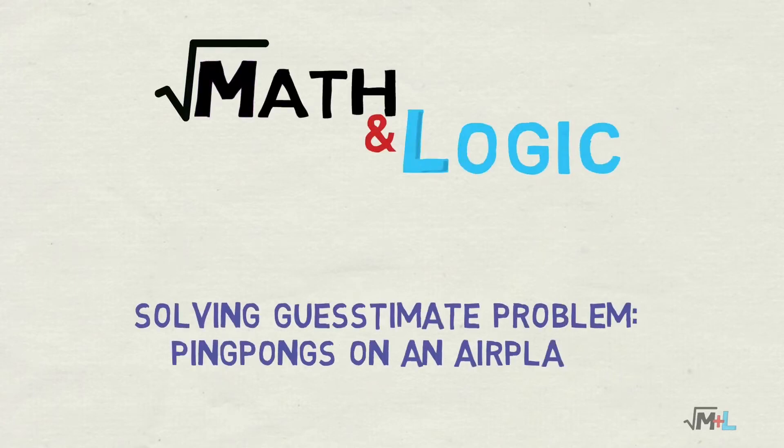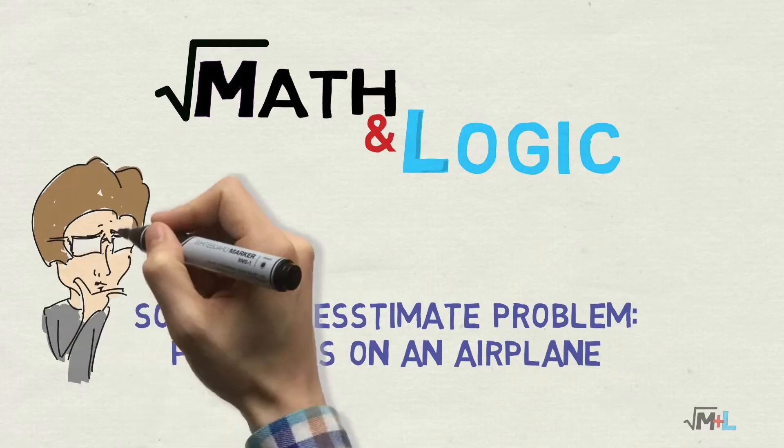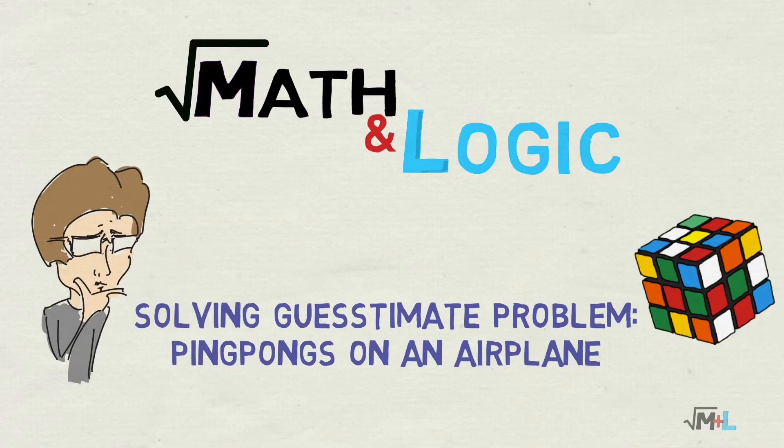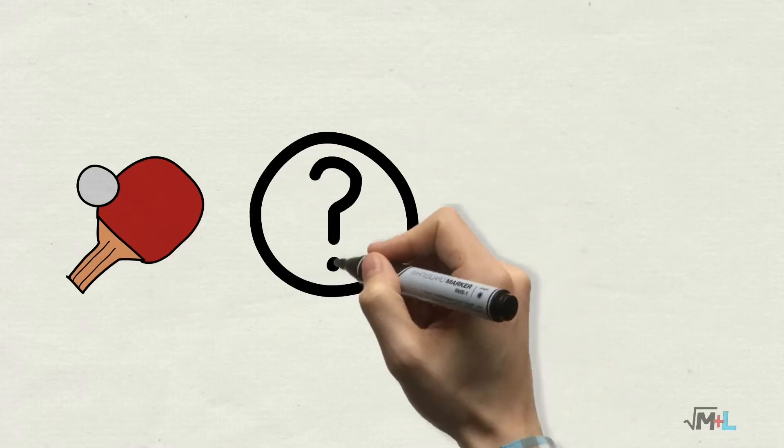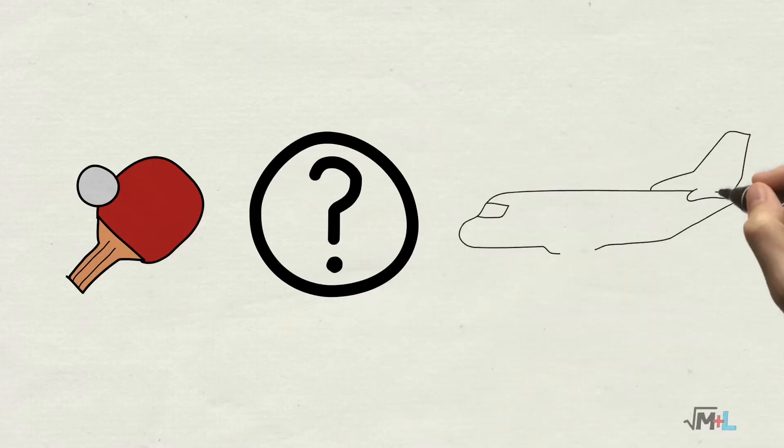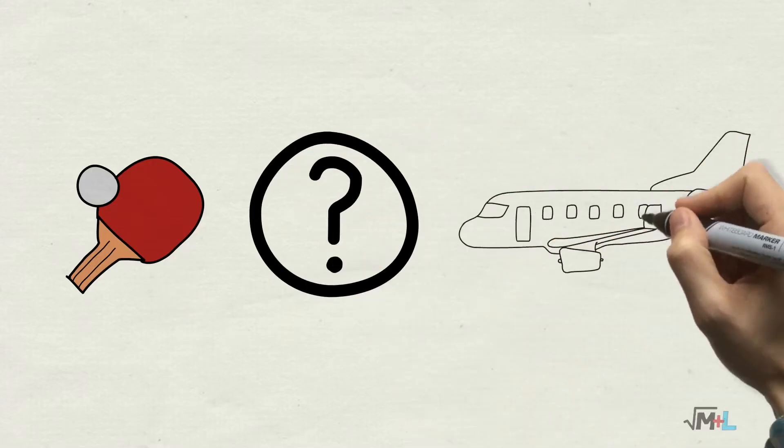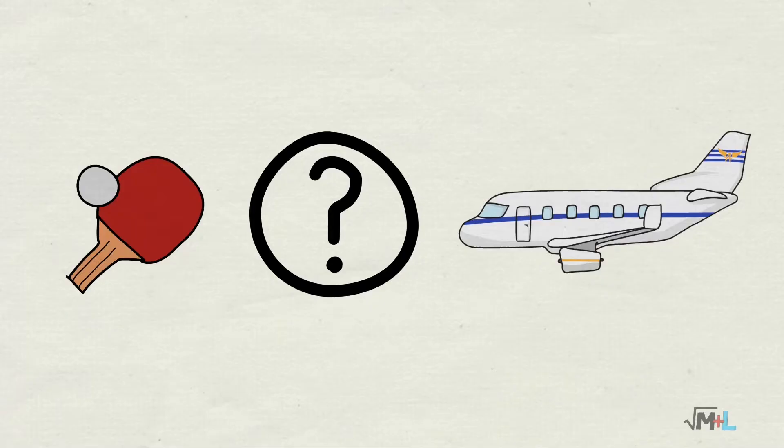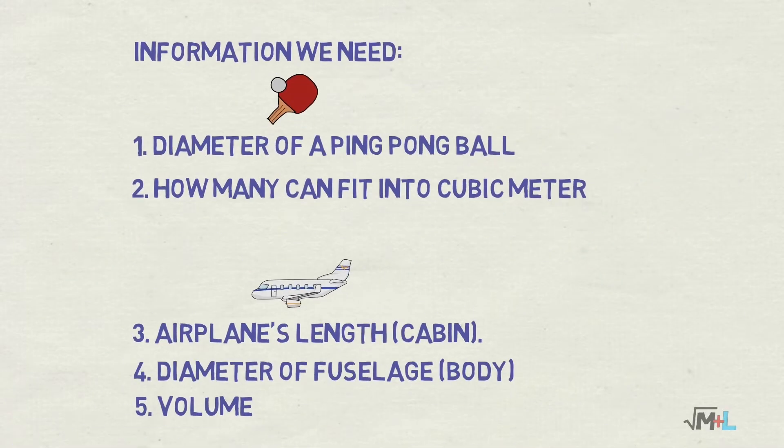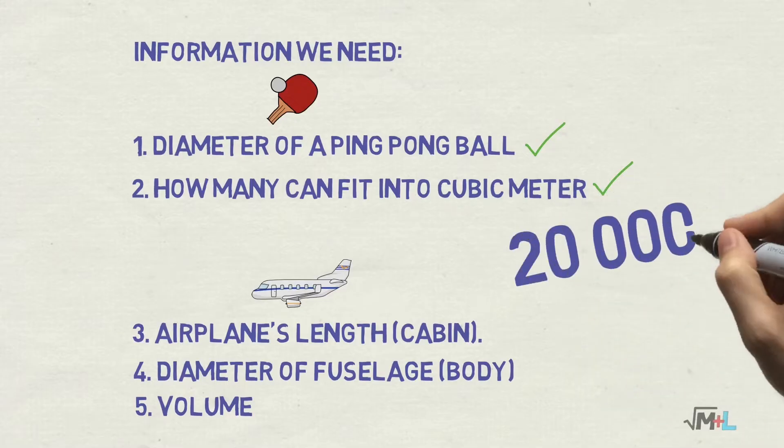Hi everyone! Welcome to Math & Logic. This is part 2 of solving job interview guesstimate problem, namely how many ping-pong balls can fit into an airplane? We approached it as if we were doing a job interview with no access to Google, only with what is in the room and what you know about math, planes and table tennis. In part 1 we estimated how many of them can fit into one cubic meter. Spoiler alert, our informed guess was 20,000.